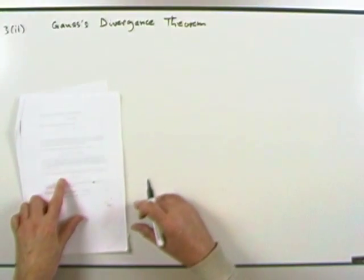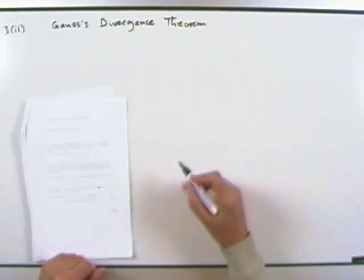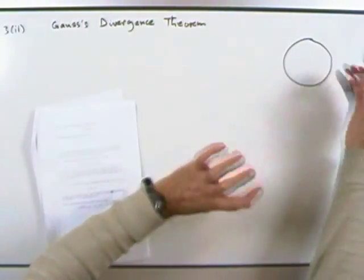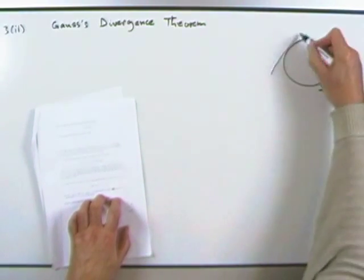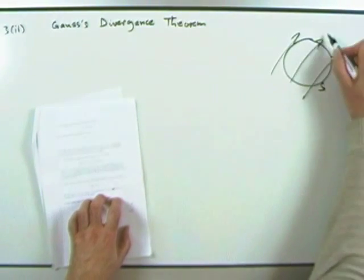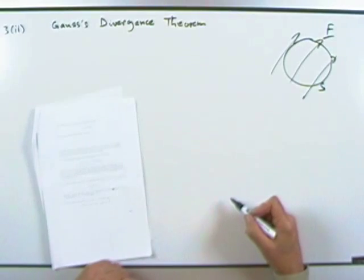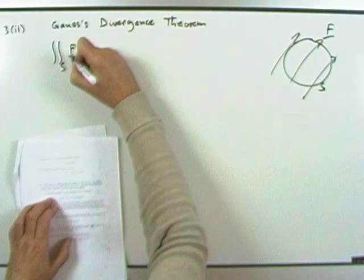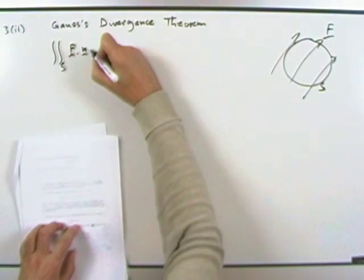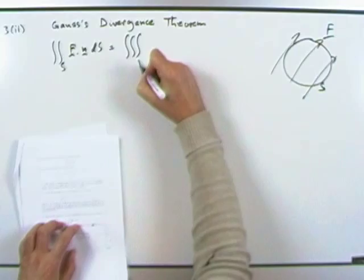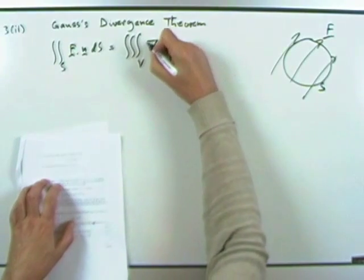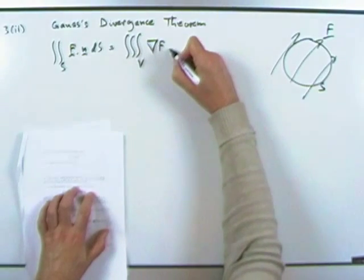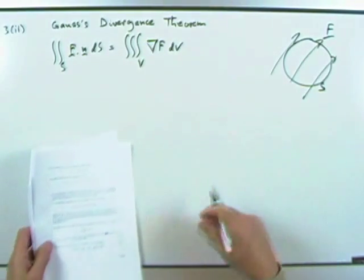Part two: state the key equation in Gauss's Divergence Theorem. If you've got some positively oriented surface and there's some vector field operating through it, then the surface integral of F dot n dS is equal to the volume integral of the divergence — hence Divergence Theorem — of div F dV (or dx dy dz).